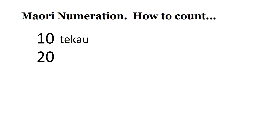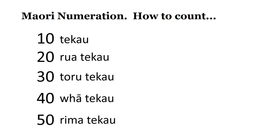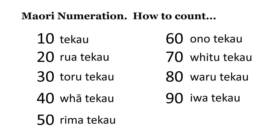Number twenty — rua te kau. Number thirty — toru te kau. Number forty — whā te kau. Number fifty — rima te kau. Sixty — ono te kau. Number seventy — fitu te kau. Number eighty — waru te kau. Number ninety — iwa te kau. Number one hundred — kotahi rau.